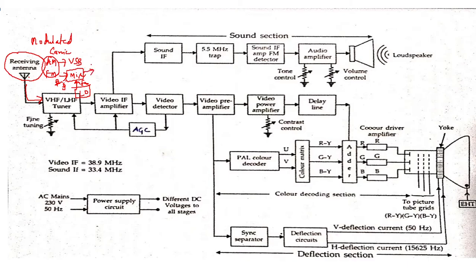Beating of these two frequencies takes place and the output is an intermediate frequency. The local oscillator changes its own frequency such that the intermediate frequency at the output remains constant, so that all subsequent circuits work at a certain fixed frequency. When the user presses the remote, infrared light from the remote affects the local oscillator of the tuner, which changes its frequency to give a constant intermediate frequency — and that is how channel selection is done.